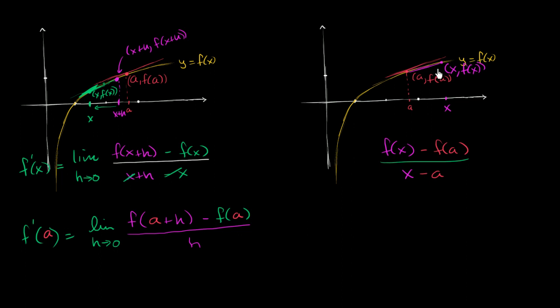Now, how can we get a better and better approximation for the slope of the tangent line here? Well, we could take the limit as x approaches a. As x gets closer and closer to a, the secant line slope is going to better and better approximate the slope of the tangent line. So we would want to take the limit as x approaches a here.